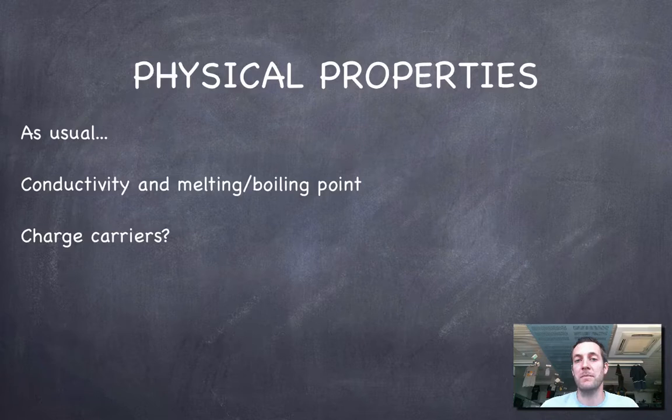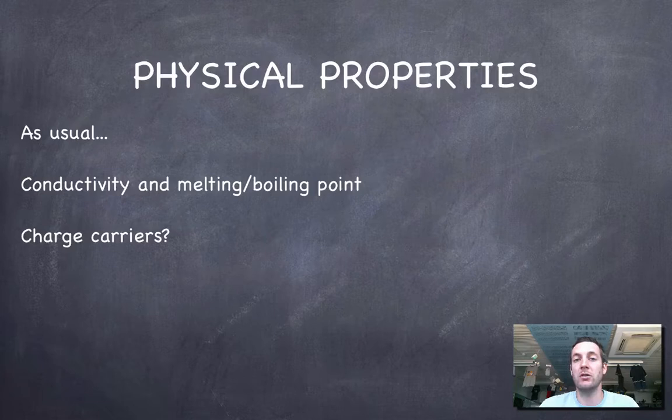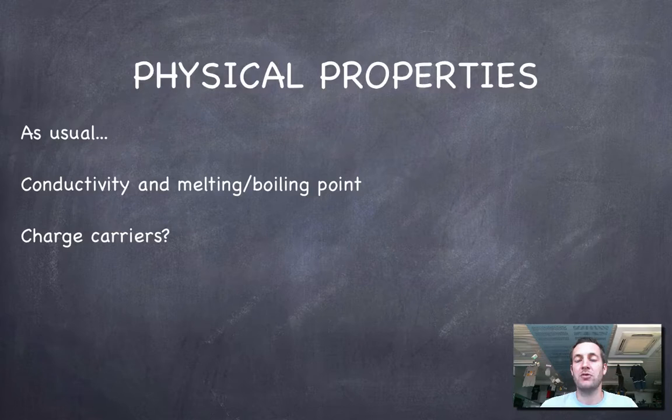Why am I saying charge carriers now instead of electrons or ions? Just because I'm being general about electrons and ions. I could say there are no free-moving electrons or ions, but I'm sticking to this idea that electricity can flow not just because electrons are moving. I'm being more general. I'm saying there's no free-moving charge carriers.